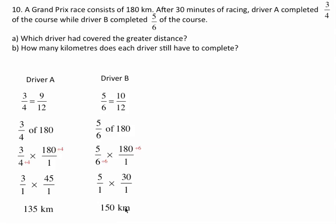Driver B has 180 minus 150, which is 30 kilometers left to go. So driver A has 45 kilometers left, and driver B has only 30 kilometers left.